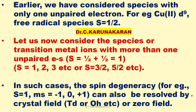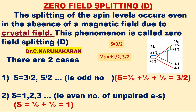The spin degeneracy levels can be resolved by the crystal field — tetrahedral or octahedral crystal field, or ligand field. This splitting occurs even in the absence of a magnetic field, and is called zero field splitting.